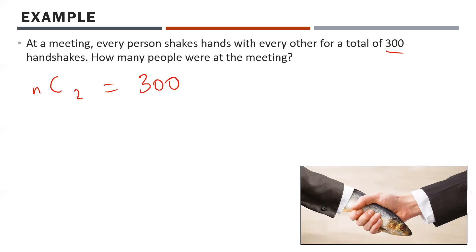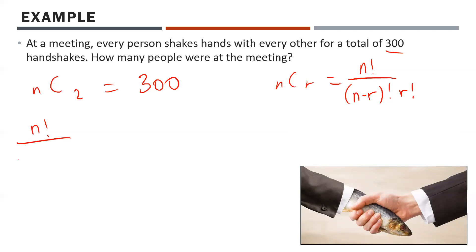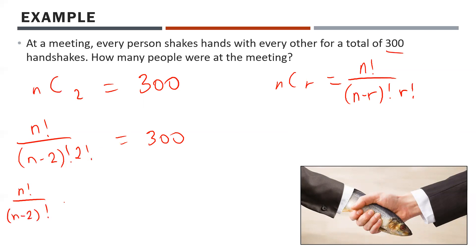Using the formula: n factorial over (n minus 2) factorial times 2 factorial equals 300. Multiply both sides by 2 factorial — which is just 2 — to get n factorial over (n minus 2) factorial equals 600. Expanding the factorials, n factorial is n × (n−1) × (n−2) × ... × 1, and (n−2) factorial cancels most of that, leaving n times (n minus 1) equals 600.